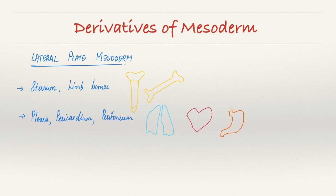The layers of the gastrointestinal tract are also formed by the lateral plate mesoderm, which includes the lamina propria, the muscularis mucosa, the submucosa and the muscularis externa.